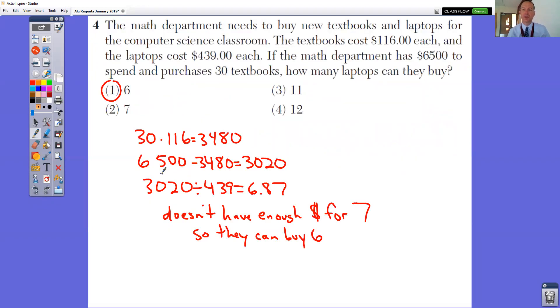The math department needs to buy new textbooks and laptops for the computer science department. The textbook costs $116 each and the laptops are $439 each. If the math department has $6,500 to spend and purchase 30 textbooks, how many laptops can they buy?